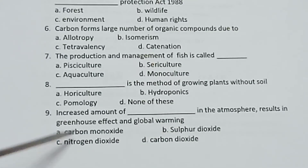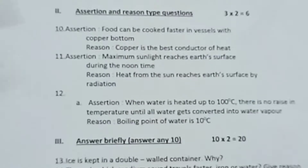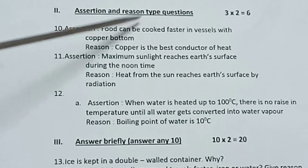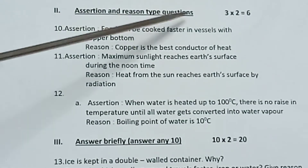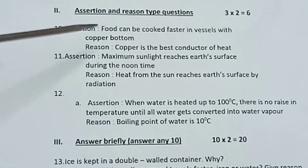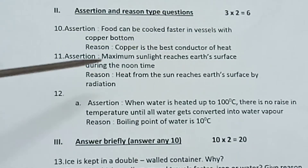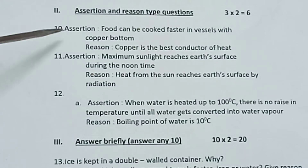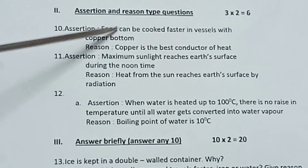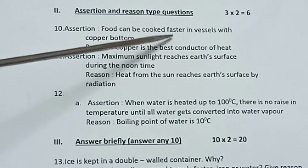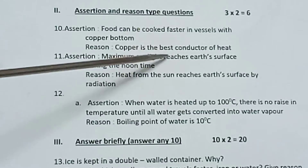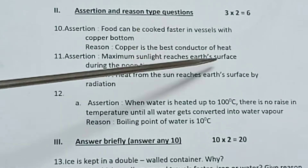What is the correct option for each question number? Part 2: Assertion and Reason type questions — 3 into 2 is equal to 6 marks. In this type of questions, as in the 10th public exam format. Tenth one — Assertion: Food can be cooked faster in vessels with a copper bottom. Reason: Copper is the best conductor of heat.